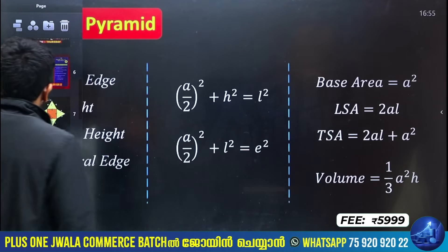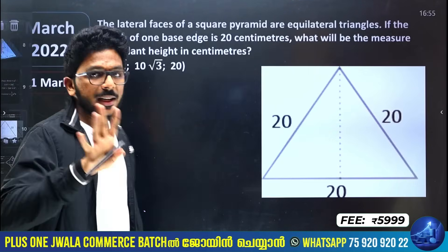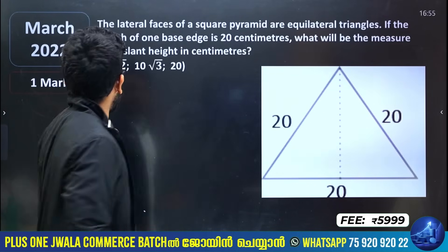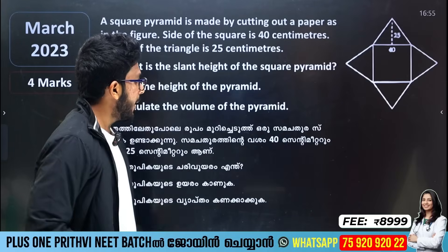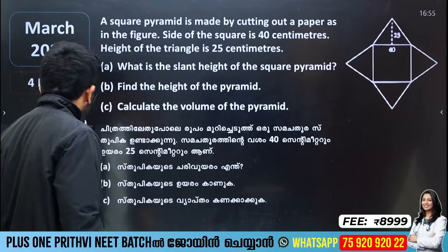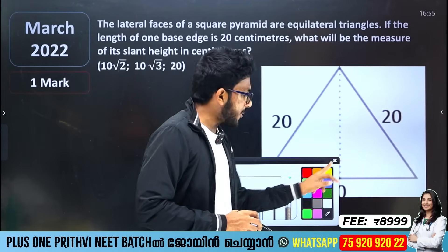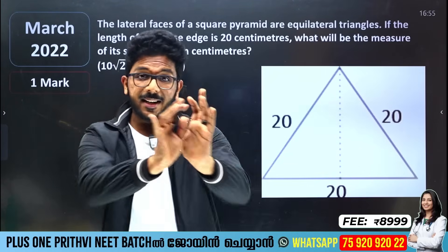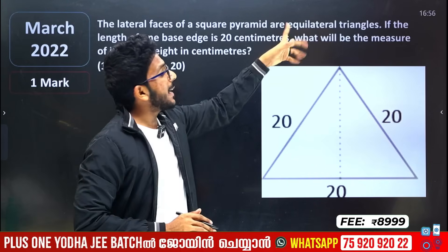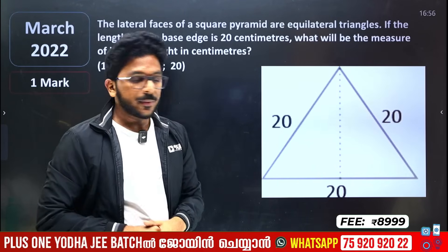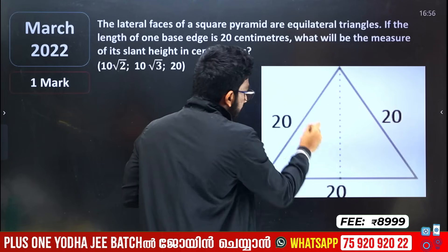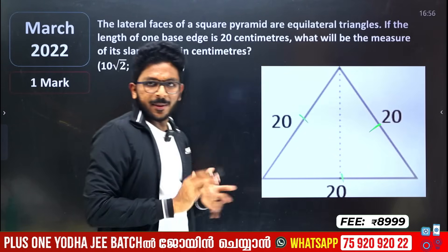Two questions come from here. One is about the lateral face — this is the lateral face. This is the first diagram. Then we have two questions. Ready? The lateral face of a square pyramid is an equilateral triangle. We have four sides of the square. Then we have 8, 8, 8 equal sides.